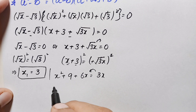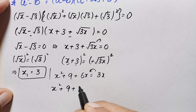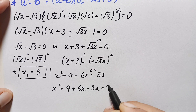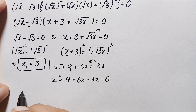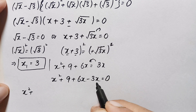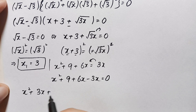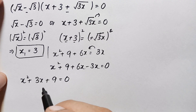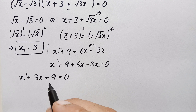Moving 3x to the left-hand side: x² + 9 + 6x − 3x = 0, which simplifies to x² + 3x + 9 = 0. This is a quadratic equation that cannot be solved by factorization or completing the square, so we will use the quadratic formula.